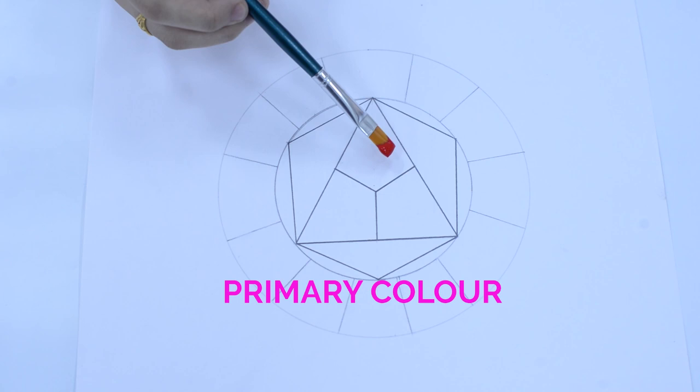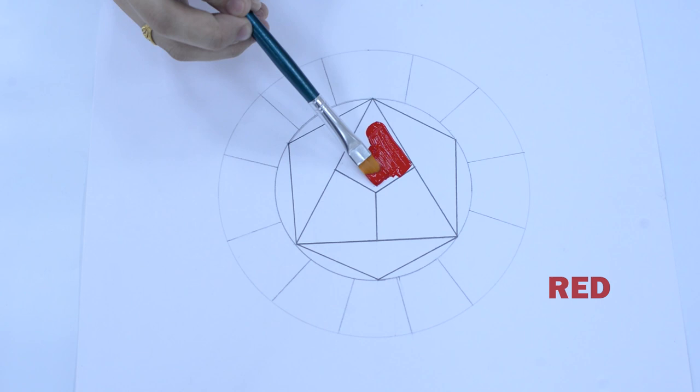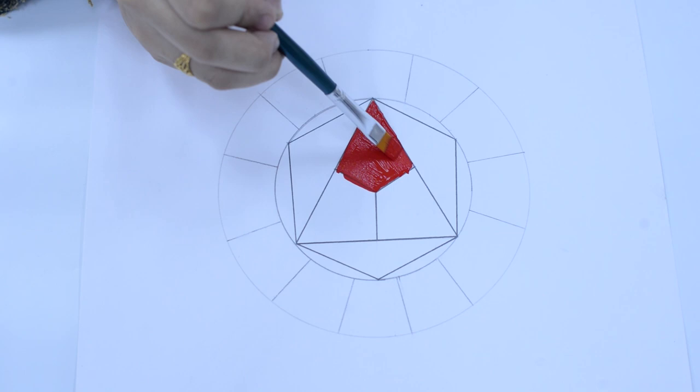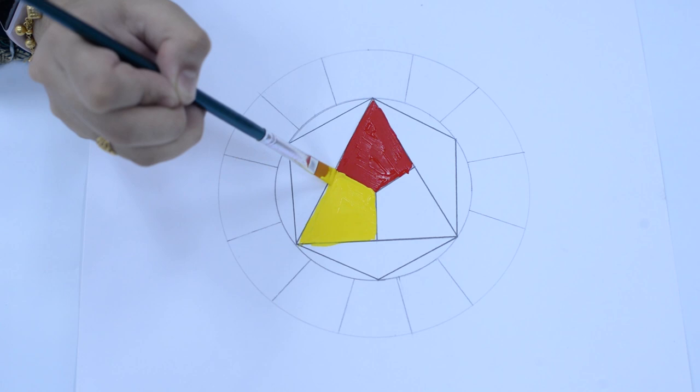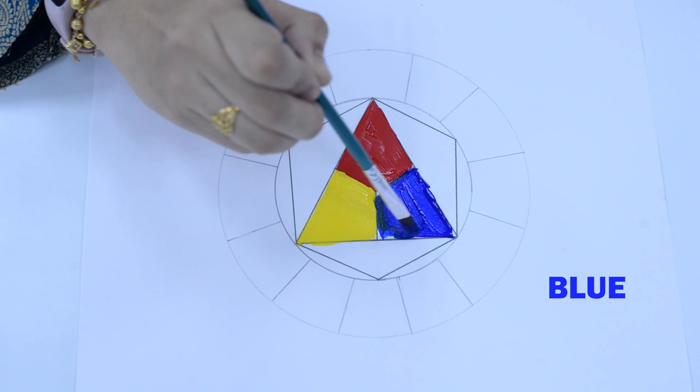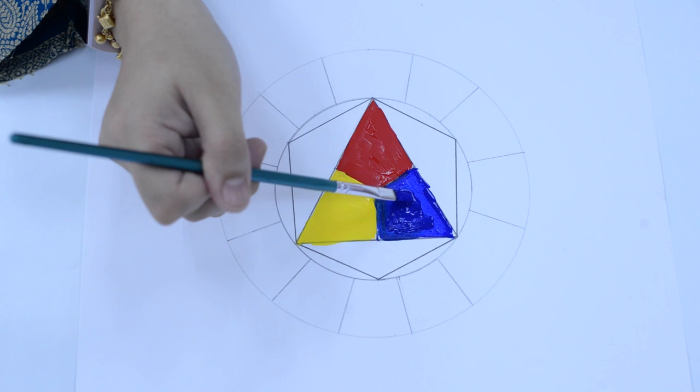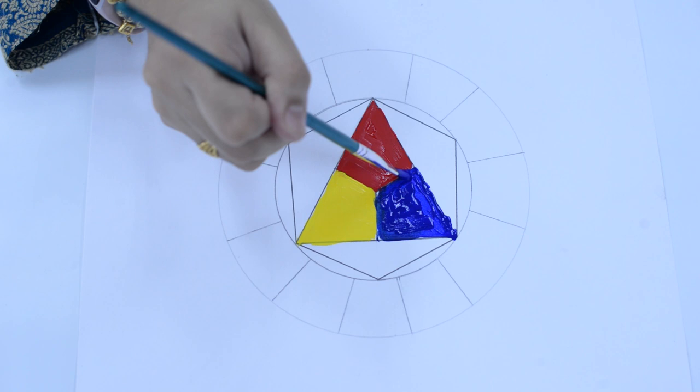Primary color consists of three colors which are red, yellow, and blue. These three colors are considered primary because they can be mixed to create other colors, but you can't make the primary colors by mixing any other colors.